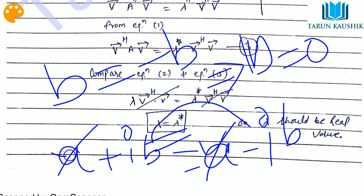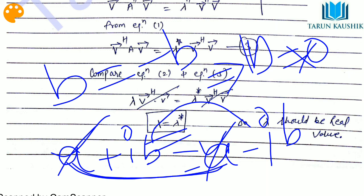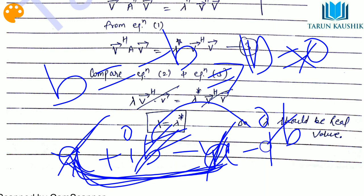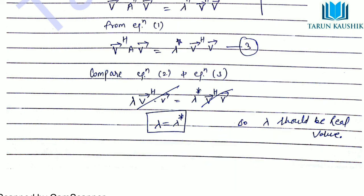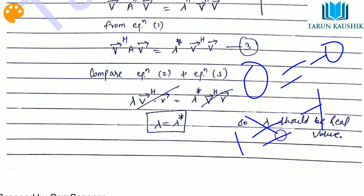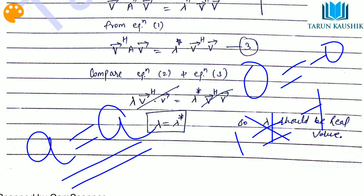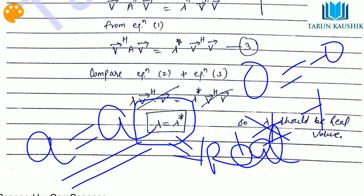From b equals minus b, we get 2b equals 0, so b equals 0. This means the imaginary part of lambda is zero, so lambda is real. Note that 0 is the only number equal to its own negative — for example, 1 is not equal to minus 1 — so b must be 0. Therefore the eigenvalue lambda is purely real. This completes the proof.